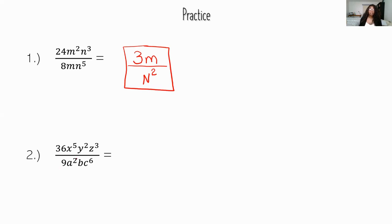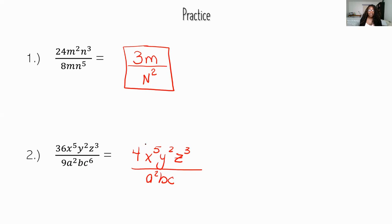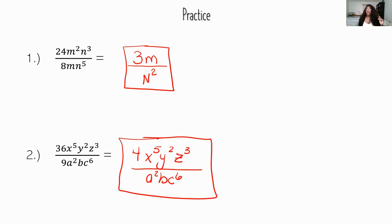For practice problem 2: divide the coefficients — 36 divided by 9 gives 4. Looking at the bases: the numerator has x, y, z and the denominator has a, b, c — there are no like terms at all. Since we can't break it down further, we just bring it all down. The 4 stays in the numerator because 36 is larger than 9. The full expression remains as written, with a denominator of 1 assumed.